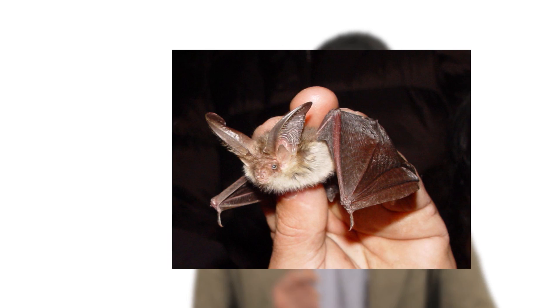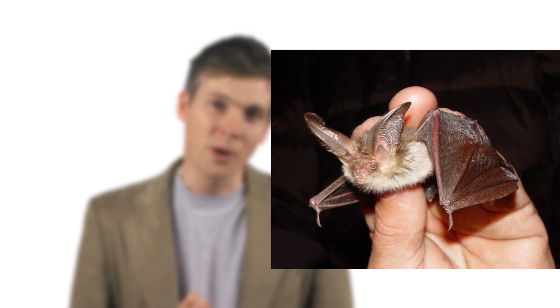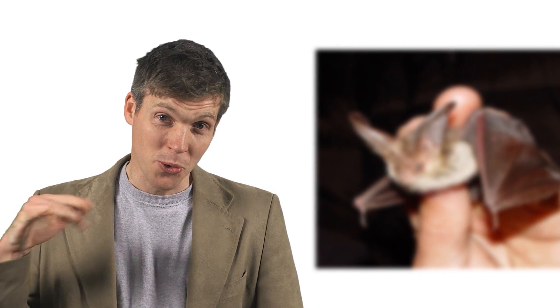Then they use their enormous ears to hear the echo so they can build up a kind of audio picture of their surroundings. Their hearing is so good that the brown long-eared bat can even hear an insect crawling across a leaf.